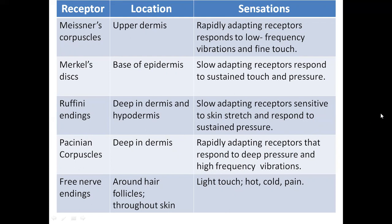Merkel's disc, located at the base of the epidermis, are slowly adapting receptors which respond to sustained touch and pressure. Ruffini endings, located deep in the dermis and hypodermis, are slowly adapting receptors sensitive to skin stretch and sustained pressure. Pacinian corpuscles, located deep in the dermis, are rapidly adapting receptors that respond to deep pressure and high frequency vibrations. Free nerve endings, located around hair follicles throughout the skin, carry the sensation of light touch, hot, cold and pain.